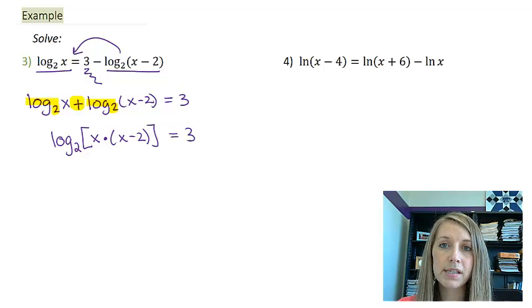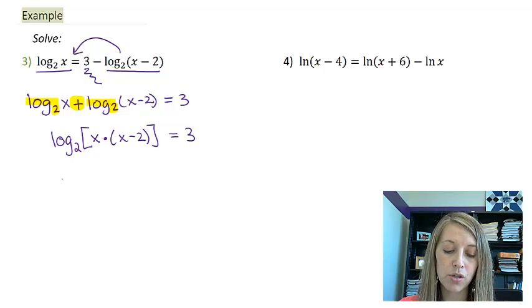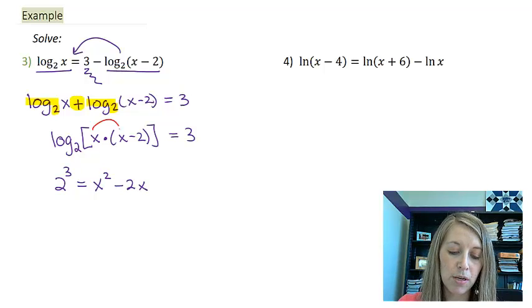Now I can very easily convert that into my exponential format. This gives me 2 to the 3 equals x squared minus 2x. I get that by distributing this here.